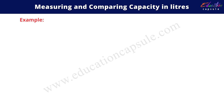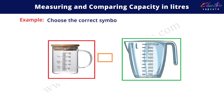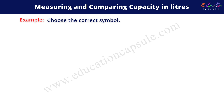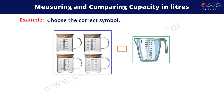Let's learn with examples. Here, choose the correct symbol. On the left hand side, you can see a measuring jug with a capacity of two hundred and fifty milliliters, whereas on the right hand side, you can see a measuring jug with the capacity of one thousand milliliters. Since two hundred and fifty milliliters is less than one thousand milliliters, the symbol we'll use here is less than. Four of such two hundred and fifty milliliter jugs would make one thousand milliliters.